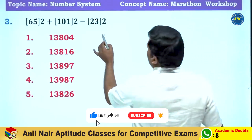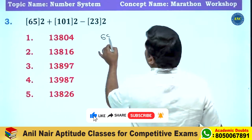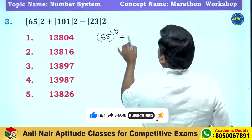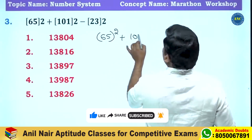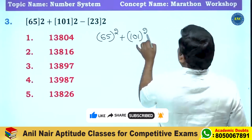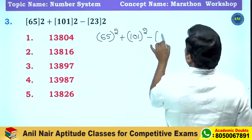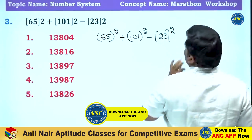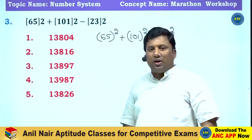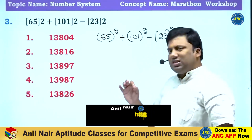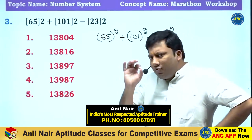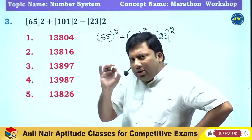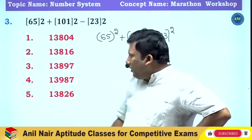65 squared plus 101 squared minus 23 squared. Kindly do not directly calculate 101 squared or 23 squared and waste your time. This is a very good problem which ensures that a student knows the fundamentals.